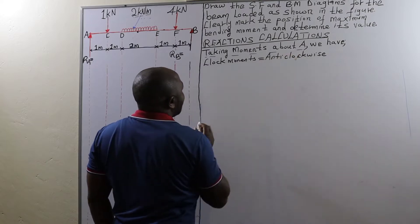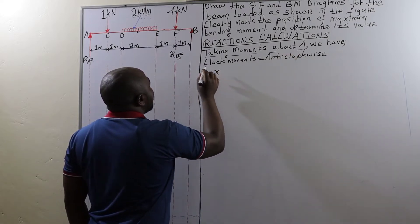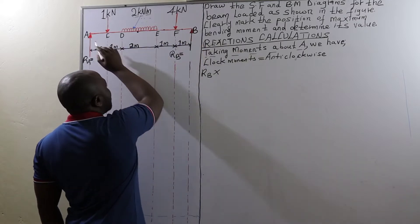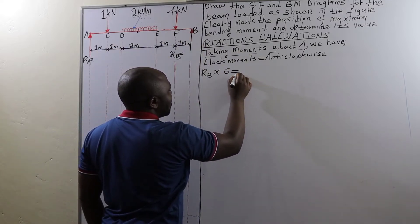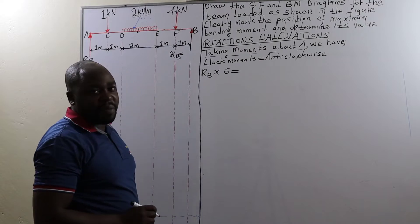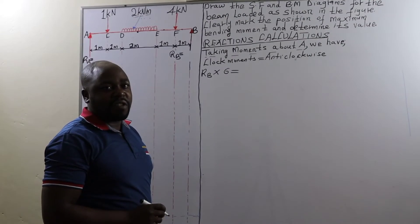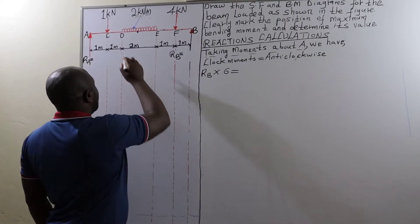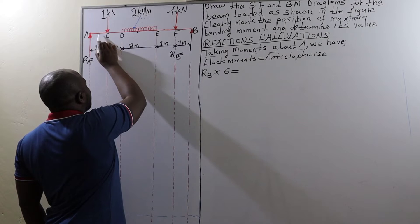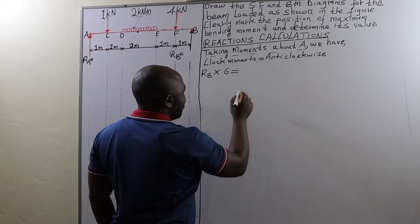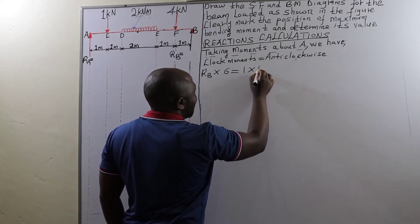Taking moments about A, we are going to have reaction at B times the distance from point B to point A, which in this case is 6 meters. That is an anticlockwise moment, which will be equal to the following clockwise moments. One of the clockwise moments is the load of 1 kilonewton times the distance from C to A, which is 1 kilonewton times 1 meter.